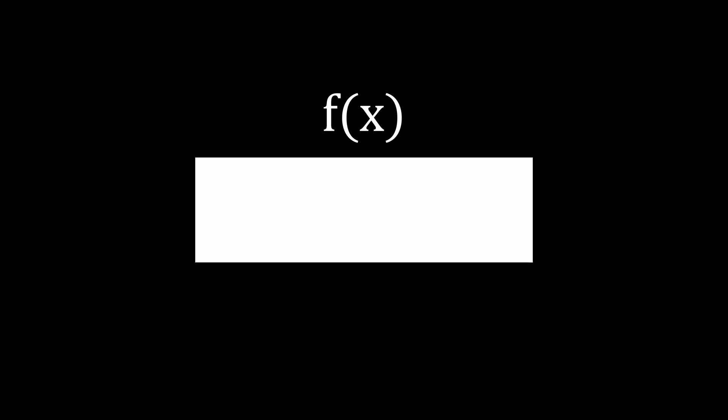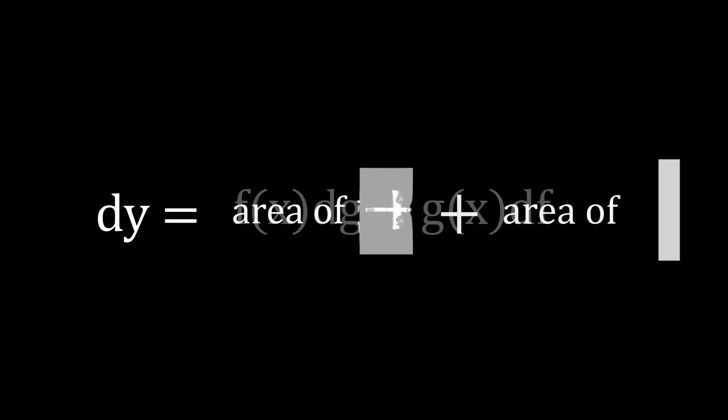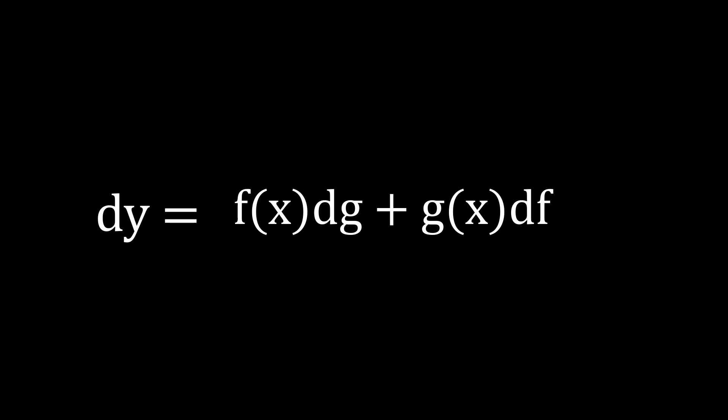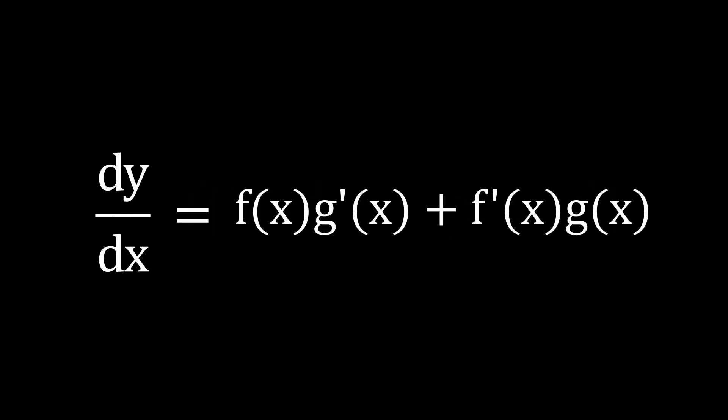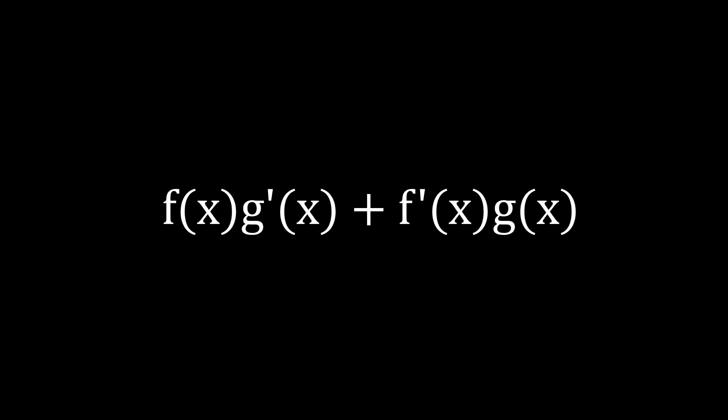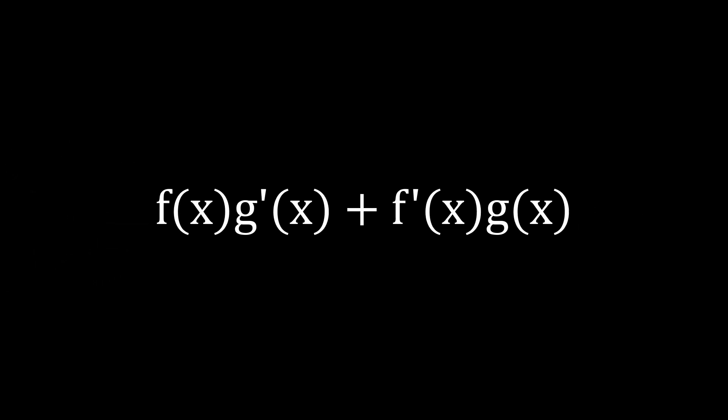The total change in area, the difference in f(x) times g(x) or dy because we're trying to calculate the function of x, is equal to both of these changes added together. Divide both sides by dx, because we're trying to calculate the change in y with respect to x. This leaves us with an addition of two multiplications, which we can write in Lagrange notation like this.